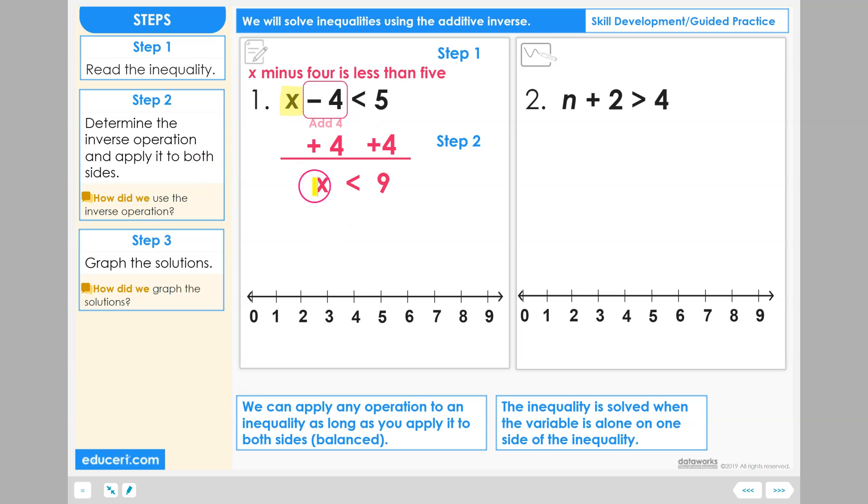Adding four to both sides. On the left hand side, we will have X, and then five plus four on the right hand side gives us nine. This inequality is solved because we have the variable alone on one side of this inequality statement.